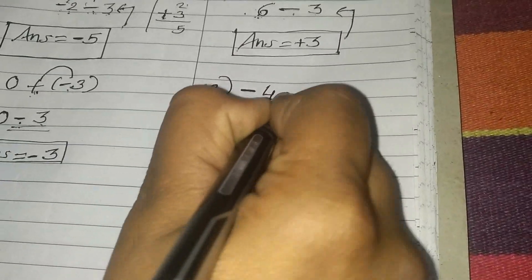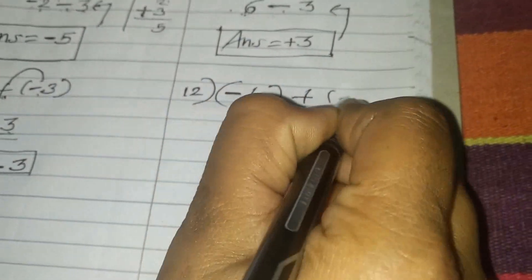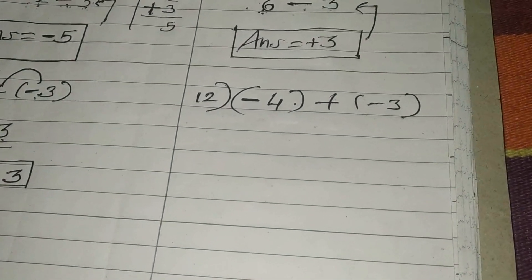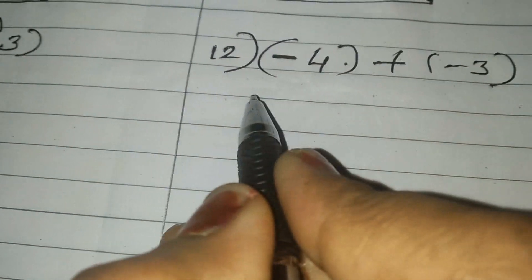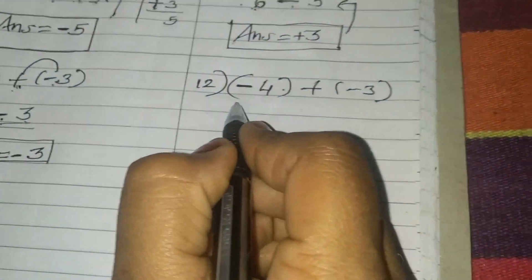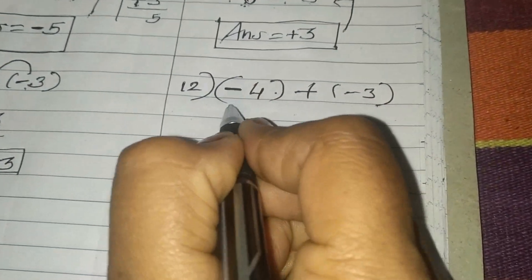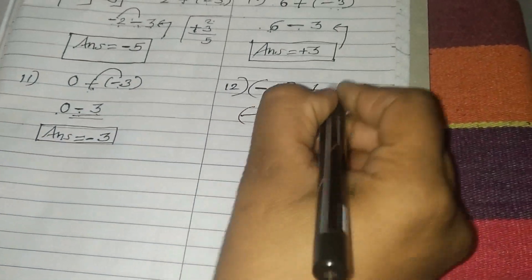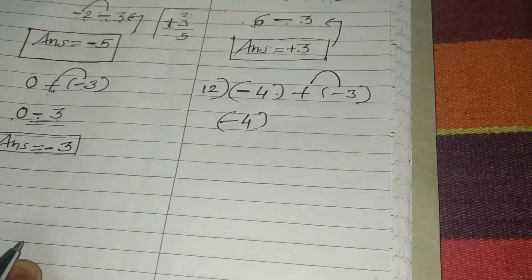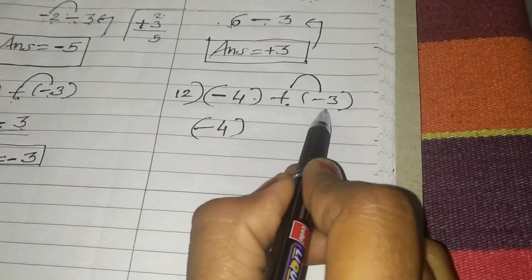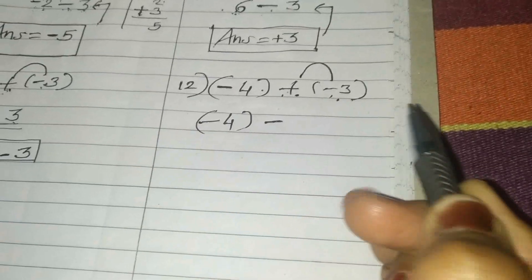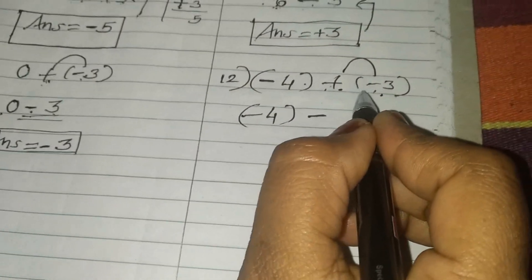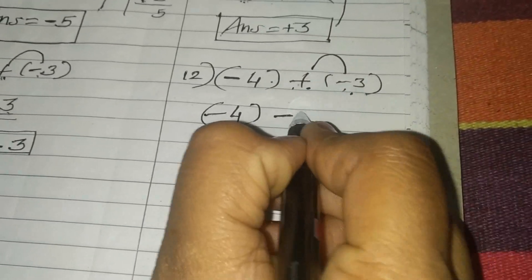Number 12. Problem is minus 4, plus bracket minus 3. Use brackets, students, please. Here we take first number as it is: minus 4. Then we do reduction of these 2 signs — plus minus, different sign, subtraction. So your sign gets reduced and the next number is written as it is.